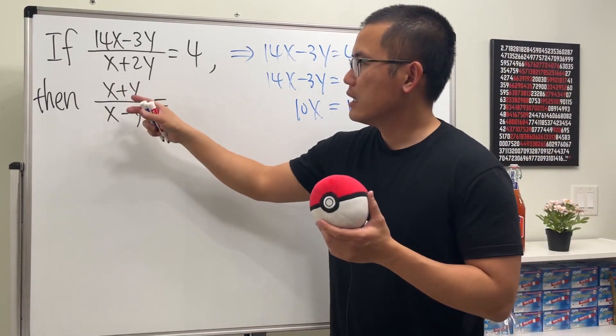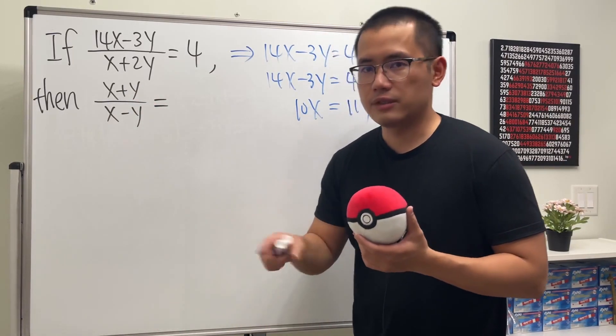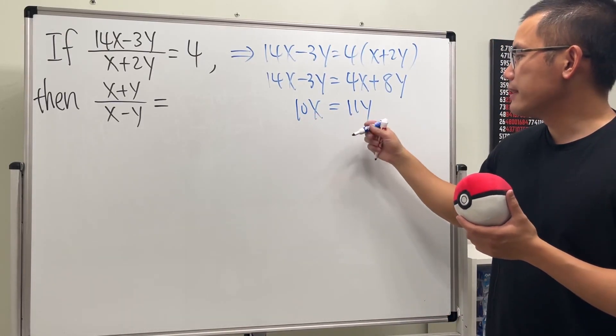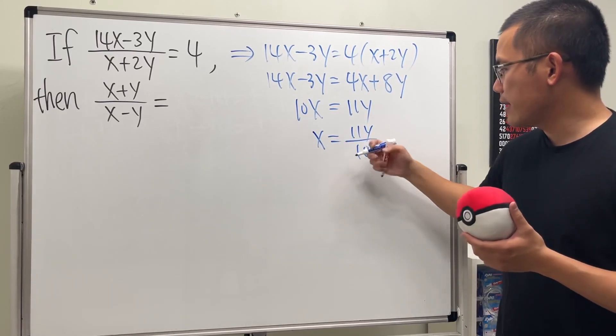Let's isolate one of the variables and then just plug into this. And then if everything has that variable, you can factor things out and cancel things out. So that's the strategy that we'll take. So let's solve for x. Divide both sides by 10. We get x being equal to 11y over 10.